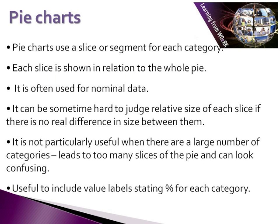So the first type of chart we're going to look at is pie charts. Pie charts use either a slice or a segment of the pie to represent each category, and each of those slices or segments is shown in relation to the whole pie. It's often used for data that has categories, so that is nominal and ordinal data.